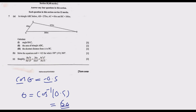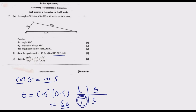We use the ASTC principle: 'All Students Take Chemistry' — All (quadrant 1), Sine (quadrant 2), Tangent (quadrant 3), Cosine (quadrant 4). Since the angle must be between 180° and 360°, and cosine is negative in the third quadrant, the angle is 180° plus 60°. Therefore θ equals 240 degrees.